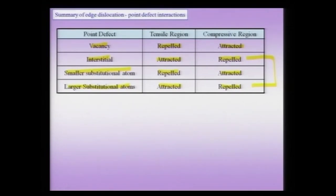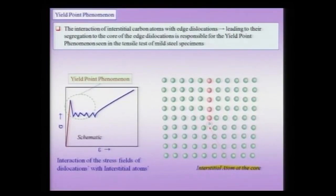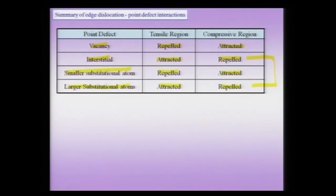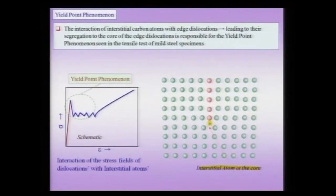In a carbon solid solution in BCC iron, the interstitial carbon atoms can actually segregate to the core region of the dislocation and preferentially sit in that region. Along the dislocation line into the plane of the slide, many atoms can come and sit near the core — this is what is called the Cottrell atmosphere. There is an atmosphere of these atoms around the core region of the dislocation, and overall this results in the lowering of the energy of the system, because the compressive stress field of the interstitial atom cancels the tensile stress field of the dislocation.